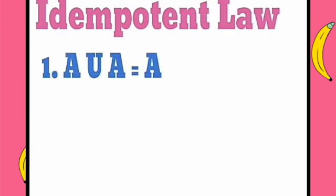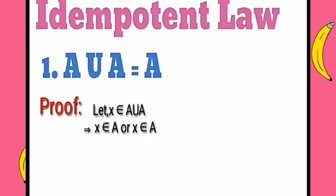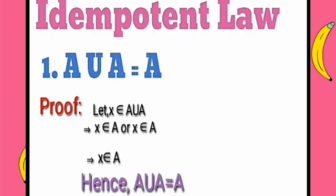Let us prove A union A is equal to A. Let x belong to A union A. We can also write x belongs to A or x belongs to A. That means x belongs to A. Hence A union A is equal to A. Proved.